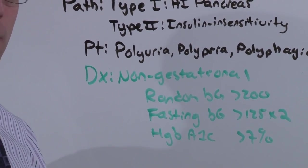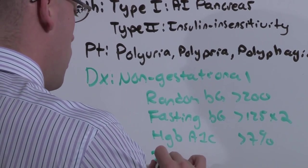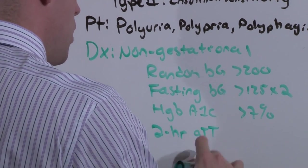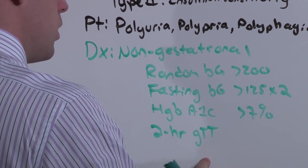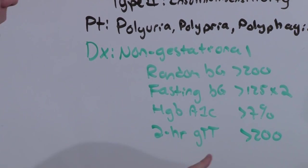But if the patient doesn't necessarily meet these criteria, say the fasting glucose is greater than 100 but less than 125, they're said to have impaired glucose tolerance. And then you'll want to do the 2 hour glucose tolerance test, where after 2 hours after a glucose load, if they're greater than 200, they're diagnosed with diabetes.